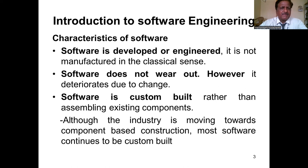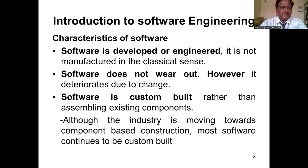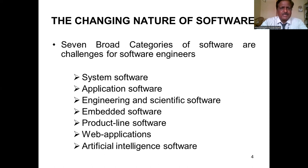Software has various characteristics. Software is developed or engineered — it is not manufactured in the classic sense. Software does not wear out; however, it deteriorates due to change. Software is custom built rather than assembled from existing components, although the industry is moving towards component-based construction.